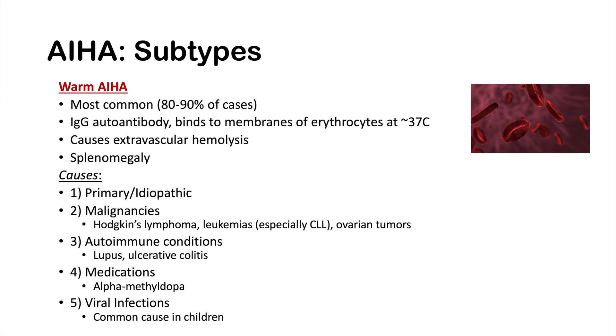The key takeaway is that warm autoimmune hemolytic anemia is the most common autoimmune hemolytic anemia, caused by an IgG autoantibody that leads to extravascular hemolysis and splenomegaly.